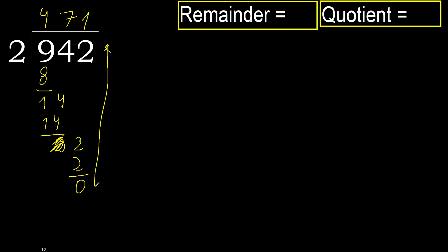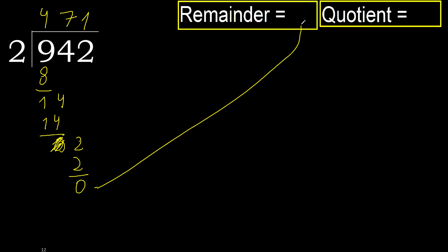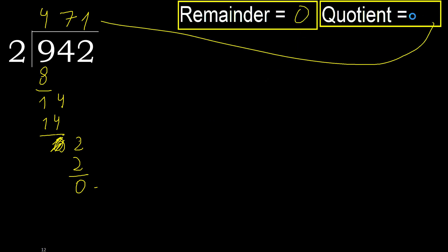There is no next number, therefore finish it. Ok. Therefore, 942 divided by 2 is 471.